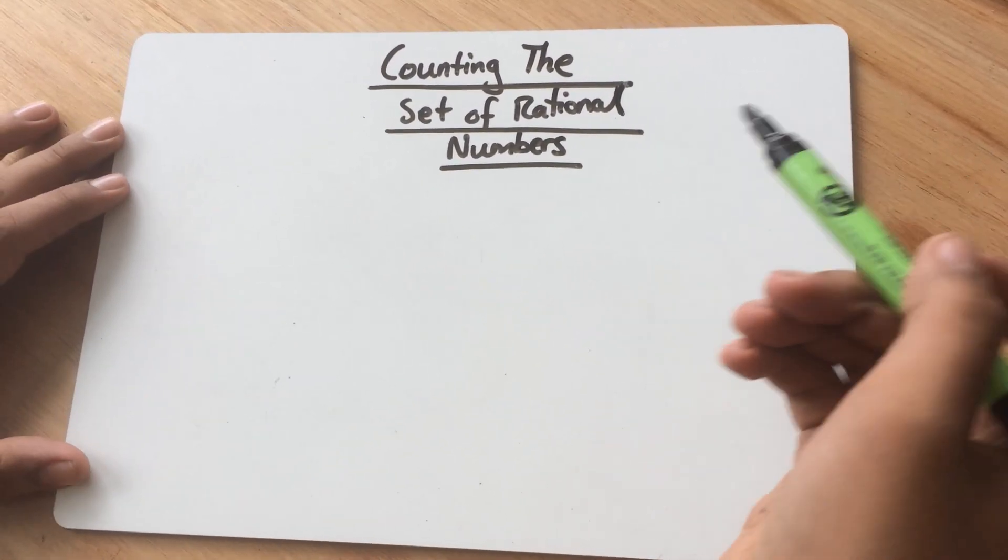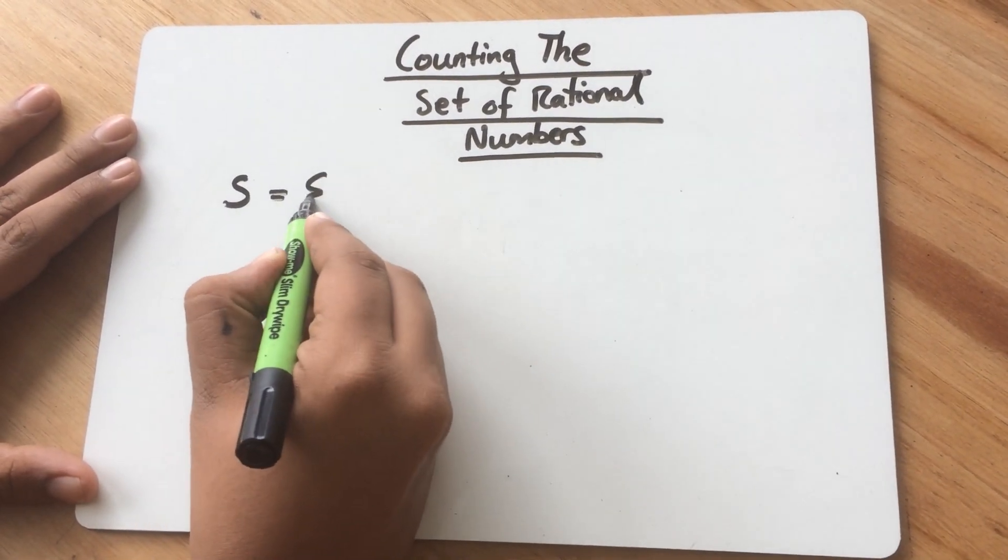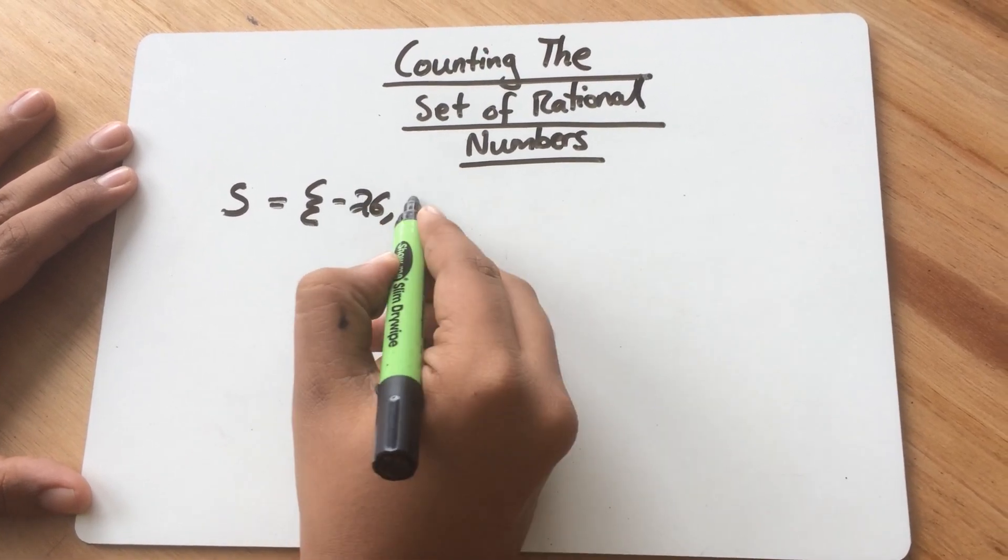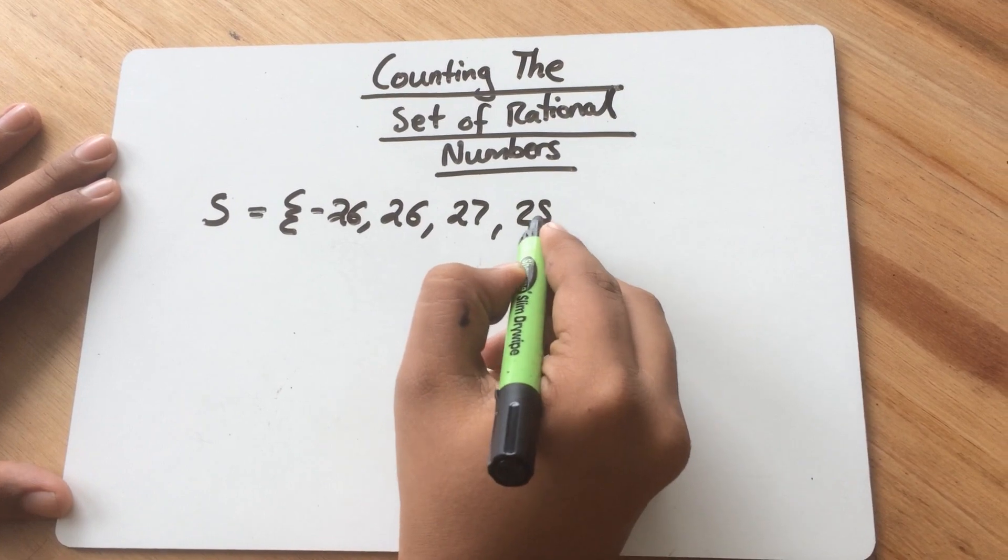A set is considered countable only if each element in that set can be associated with a distinct element of the natural numbers. So let's have an example. Consider set S, and the elements of this set are, randomly, minus 26, 26, 27, and 28.